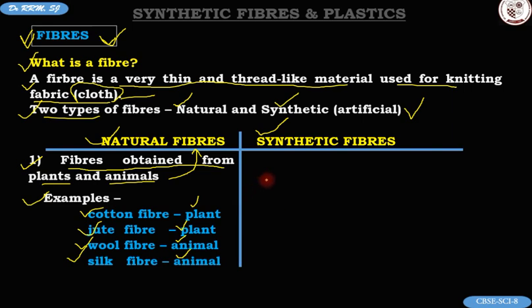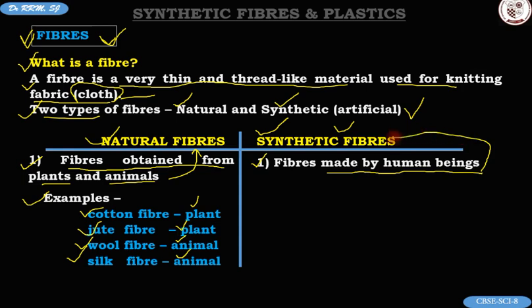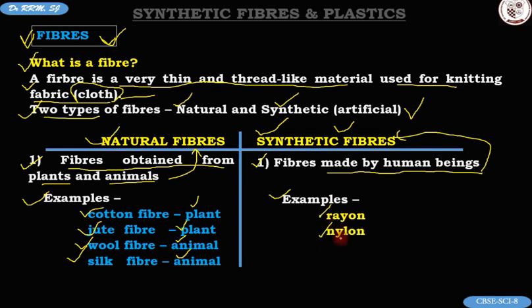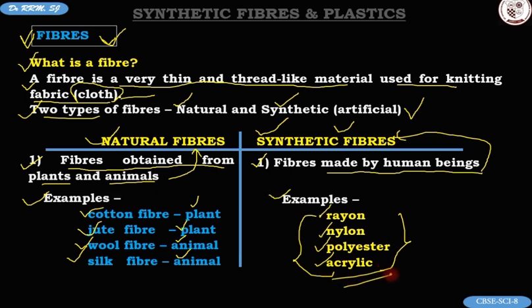What about synthetic fibers? Where do you find them? The fibers which are made by human beings are called synthetic fibers. We have some beautiful examples of synthetic fibers: rayon, nylon, polyester, acrylic, and so on. Where do we get all these synthetic fibers? We shall study about them as we proceed. Let's move on for the moment.